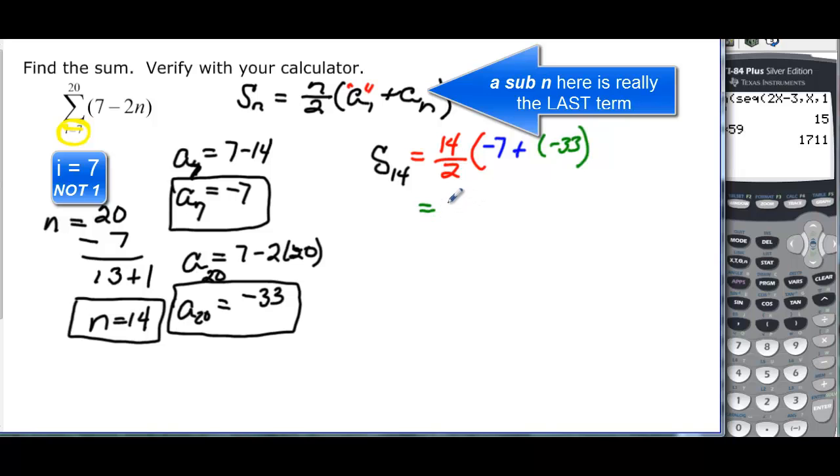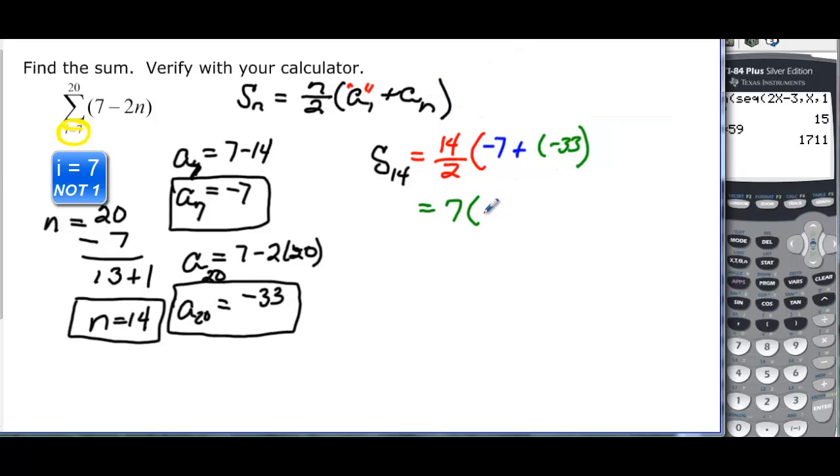So that gives us 14 divided by 2 is 7, times negative 7 plus negative 33 would be negative 40. And if I multiply 7 times negative 40, I get negative 280. So S_14 is equal to negative 280.